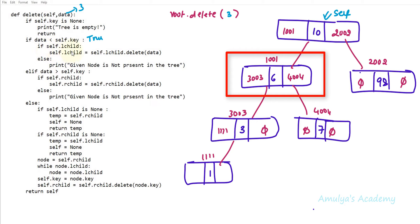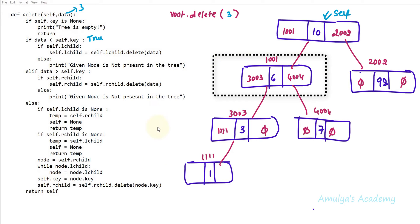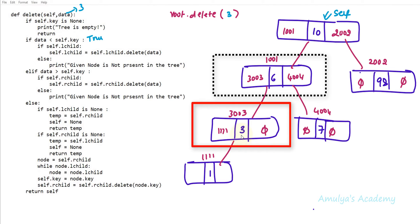Now executing the delete method for the left subtree. Self is now the node with key 6. It checks whether data is less than self.key — true, 3 is less than 6. It checks if self.lchild is present — yes — so it calls self.lchild = self.lchild.delete(data), again pausing execution here and applying delete on this subtree. Now self becomes the node with key 3.